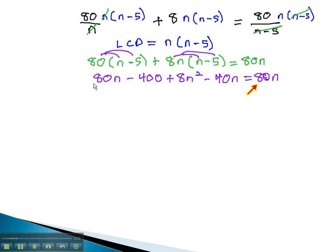Notice, we have 80n on both sides of this equation. That's going to be convenient, because we can quickly subtract 80n from both sides. Keeping everything in order, we have 8n squared minus 40n minus 400 left, equals 0.